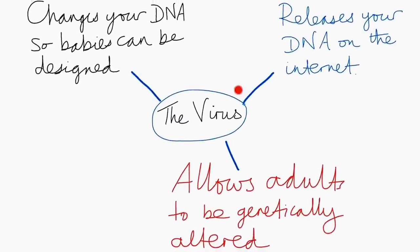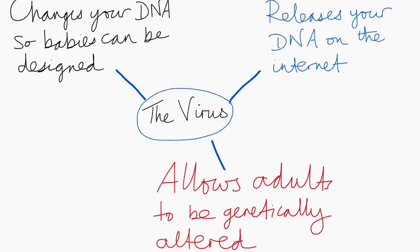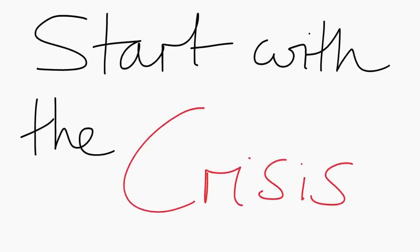Now I do exactly the same thing. I put my title at the middle of the page and spend one minute jotting down any ideas I can think of. So: it releases your DNA on the internet so everyone can access it. Or it allows adults to be genetically altered — think about drugs in the news, that's just altering what athletes can do; what if they could do that at the level of your genes? And then another possibility: it changes your DNA so that babies can be designed — designer babies, people choosing exactly what partner they want from a catalogue. People would stop having babies because they loved each other, but because they were the right DNA match. The advice is, finally, to start with a crisis, and that will help you narrow down which one you do.